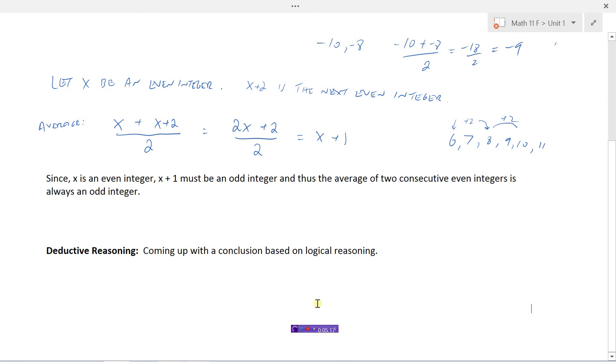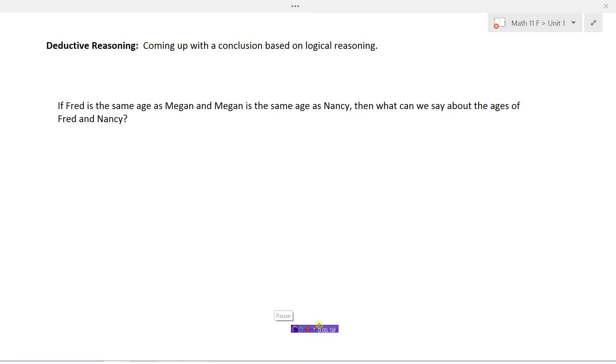Here's another example of deductive reasoning. So if Fred is the same age as Megan, and Megan is the same age as Nancy, then what could we say about the ages of Fred and Nancy? Well, we could use deductive reasoning here. We could use our logic.